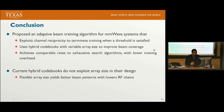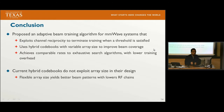In conclusion, in this work we proposed an adaptive or opportunistic beam training algorithm for millimeter wave systems. The proposed technique exploits channel reciprocity to terminate training once the quality of service threshold is satisfied. We used hybrid codebooks with variable array size to improve beam coverage at each stage. We have shown that the proposed technique achieves comparable rates to exhaustive search algorithms with lower training overhead, and that by having a flexible array size we can achieve better beam patterns with fewer RF chains.